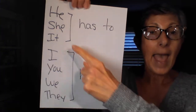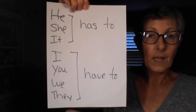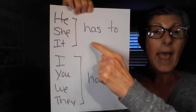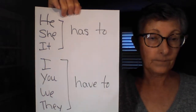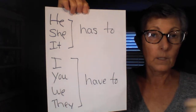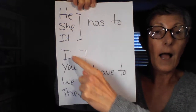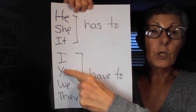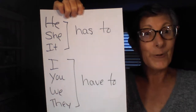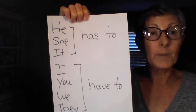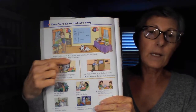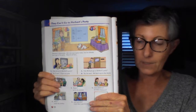Tonight we have new vocabulary and new grammar. The grammar is 'have to' and 'has to.' He, she, and it use 'has to'; I, you, we, and they use 'have to.' 'Has to' shows obligation — for example, he has to go to work, she has to go to school. So we are talking about obligation tonight. Let us listen to the examples — we're going to hear the story and then the examples.